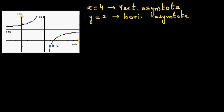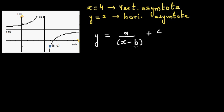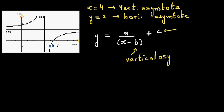Let me give you the general form of a hyperbola: y = a / (x − b) + c. Here, a, b, and c are all constants. The value b is where you write the vertical asymptote, and c is your horizontal asymptote.